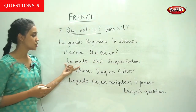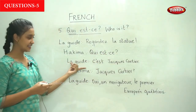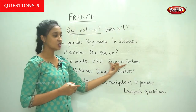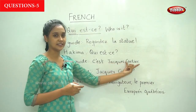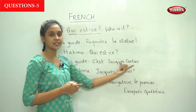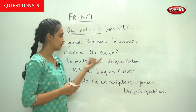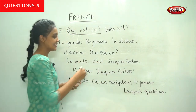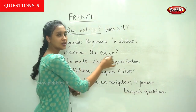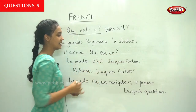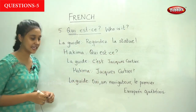Lakit replies 'C'est Jacques Cartier.' So the question is 'Qui est-ce?' — Who is this? — and the answer follows the pattern: C'est followed by the name of the person.